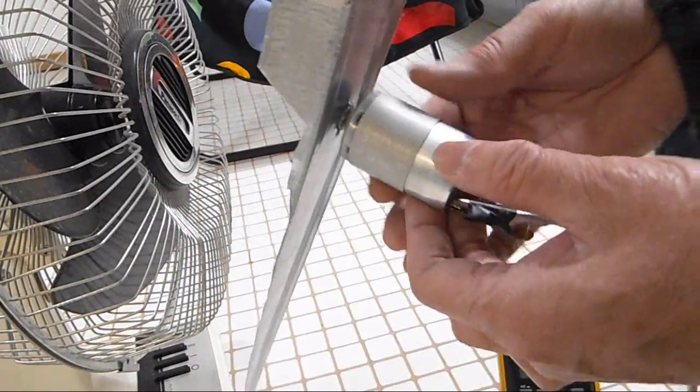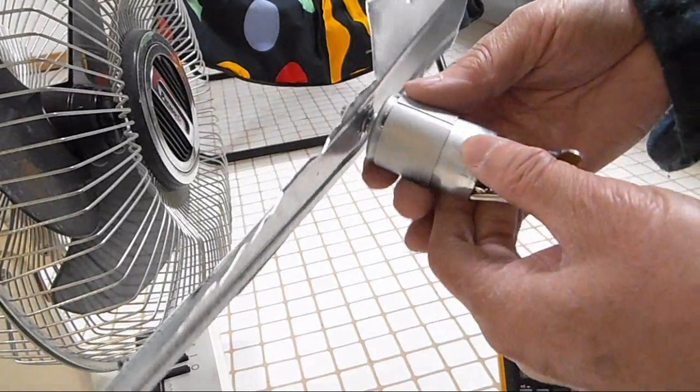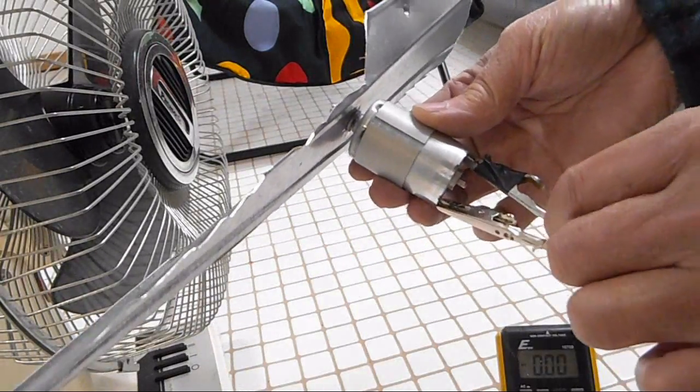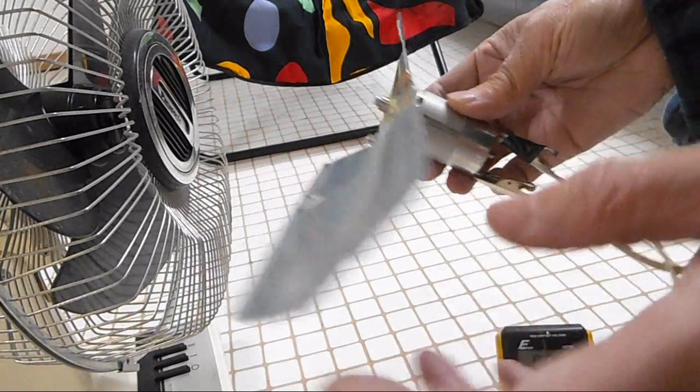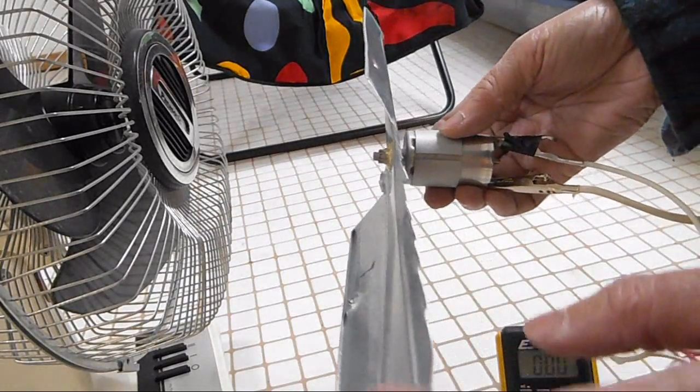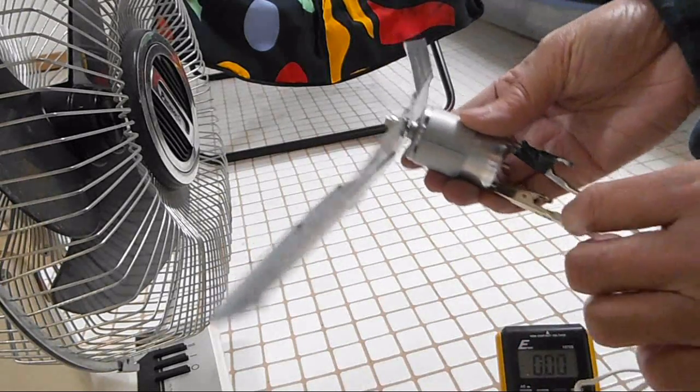What I have here is another small motor that I took out from my Epson printer. This one is a DC motor and I'm trying to see what kind of voltage I can get out of this.